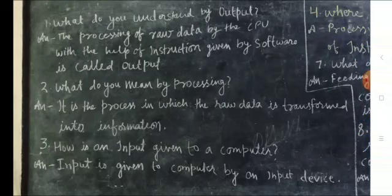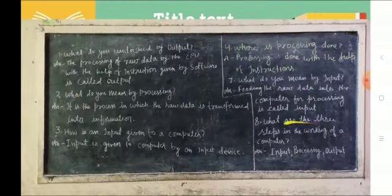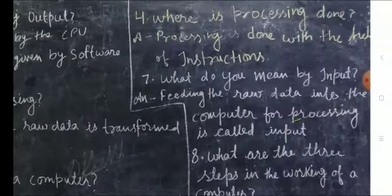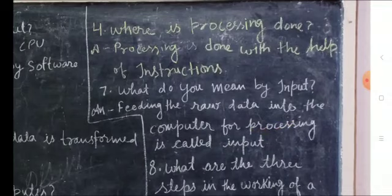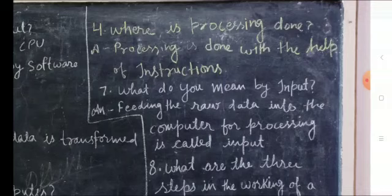Number four question, where is processing done? Processing is done with the help of instructions. Or processing CPU. Add number four answer, processing is done in CPU. Number seven question, what do you mean by input?